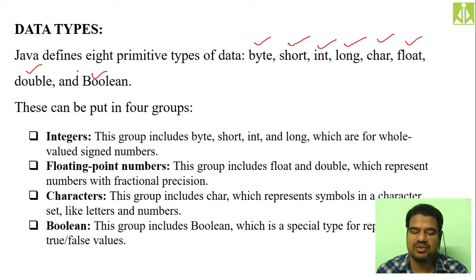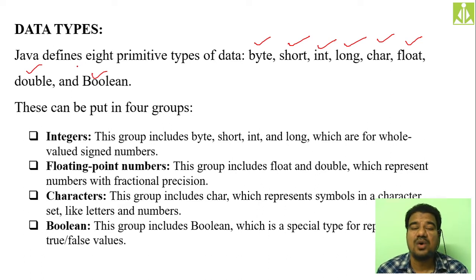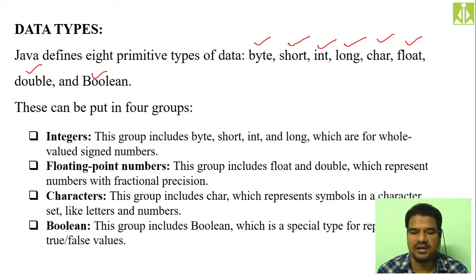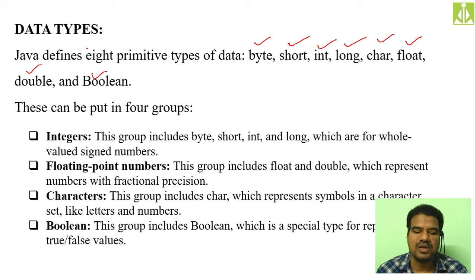First, remember what a data type is. A data type not only specifies what type of data you are going to use, but also specifies what type of operations you can perform on that data. Remember: data type does two things — specifies what type of data we are using, and specifies what type of operations we can perform on that data. In Java we have eight primitive types: byte, short, int, long, char, float, double, and boolean.